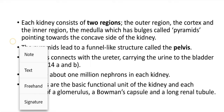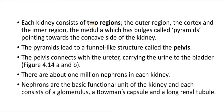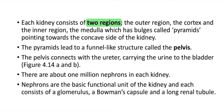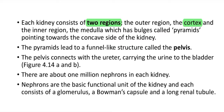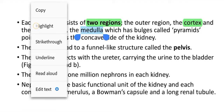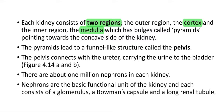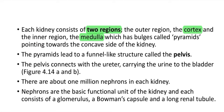Each kidney consists of two regions. The outer region is the cortex, and the inner region is the medulla. The medulla has structures called pyramids, pointing towards the concave side of the kidney.